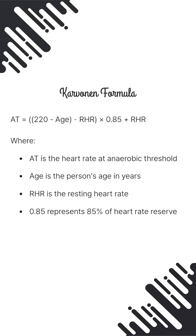For a more tailored estimate, the Karvonen formula can be useful. Subtract the resting heart rate from the max heart rate, multiply by 0.85, and add back the resting rate.